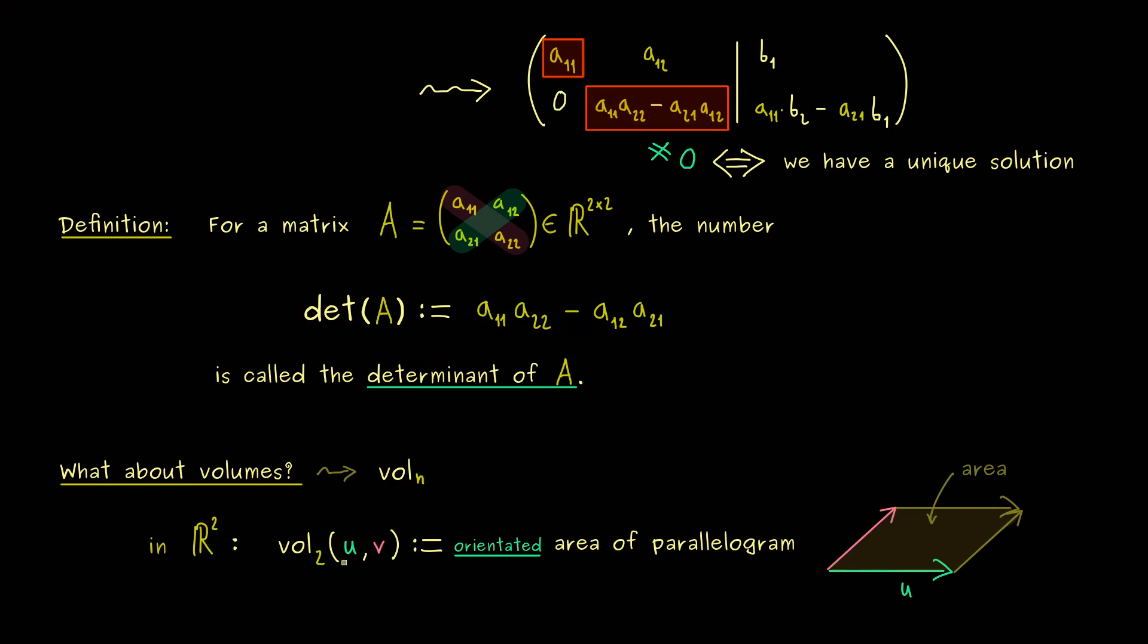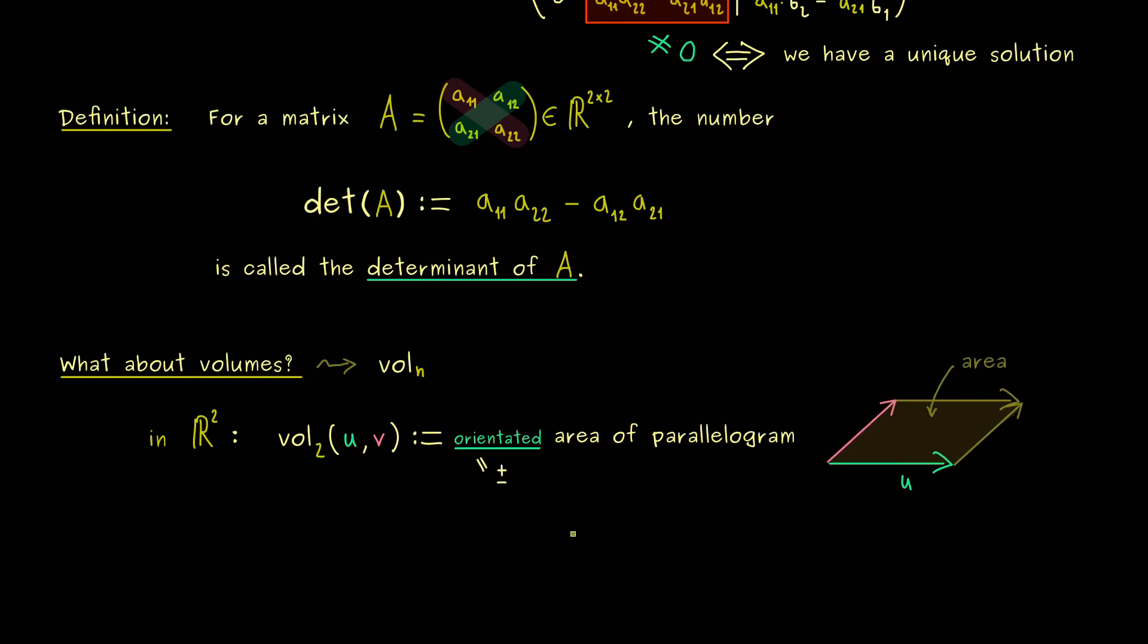Therefore, at this point you should ask, how is the orientation defined? So this means we have to define in which case we take the plus sign and in which case we take the minus sign. Indeed, it's not complicated at all. With a picture it's easy to explain.